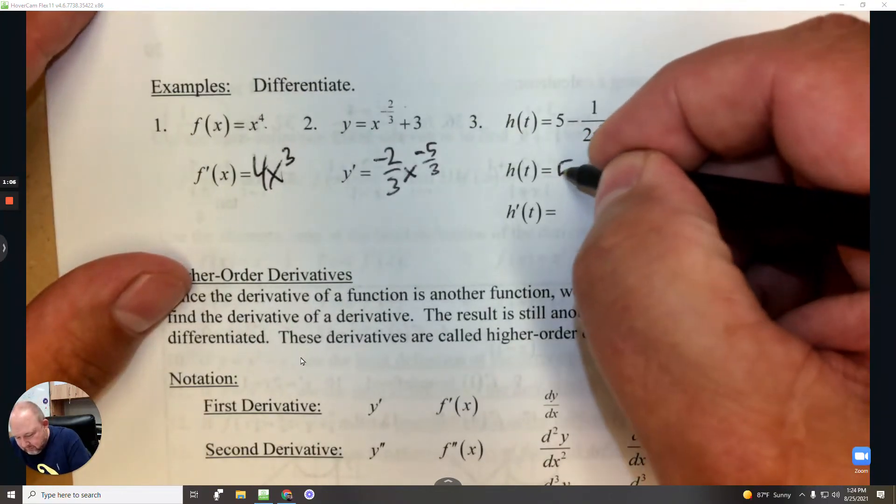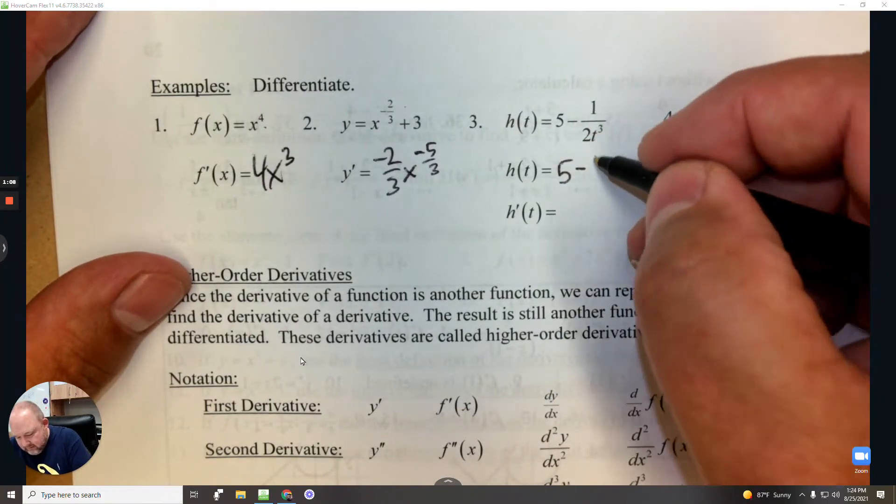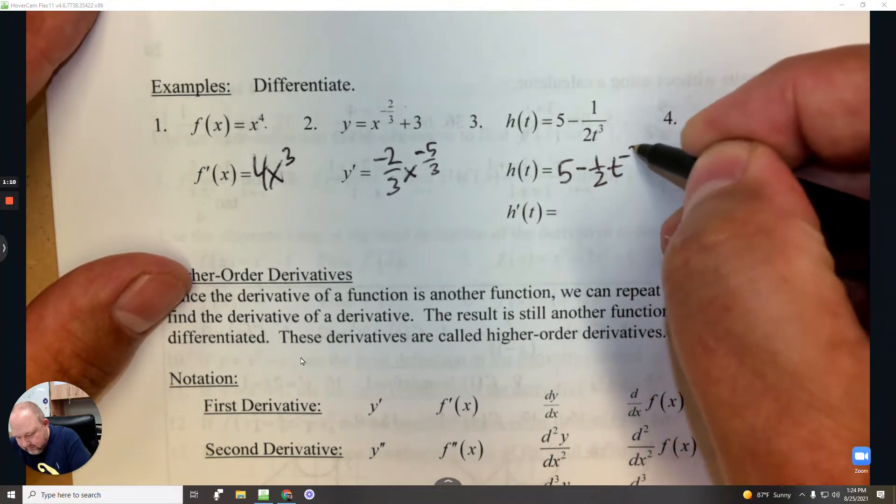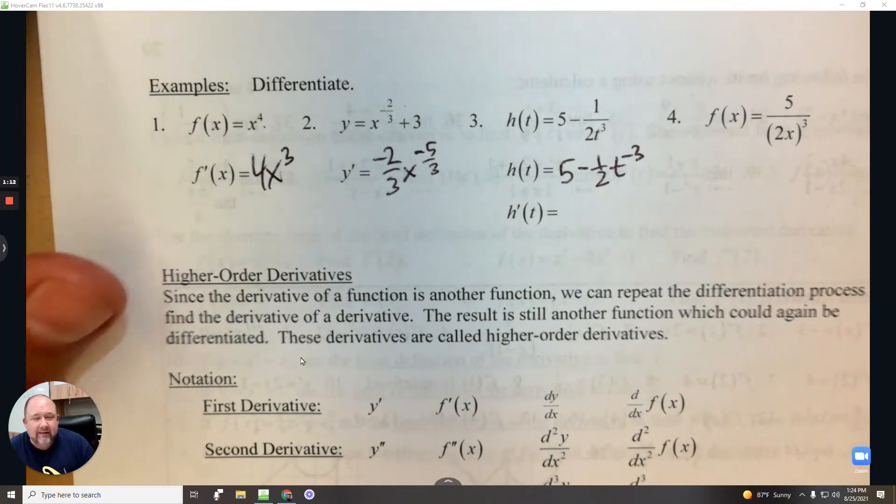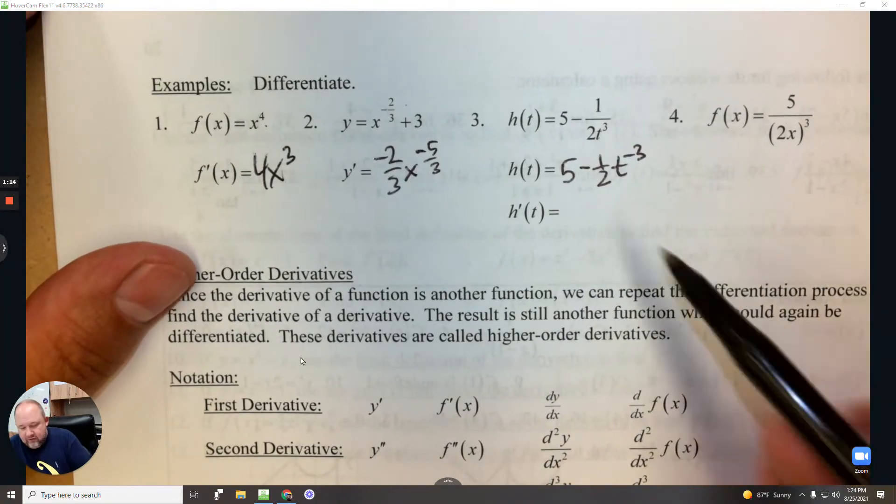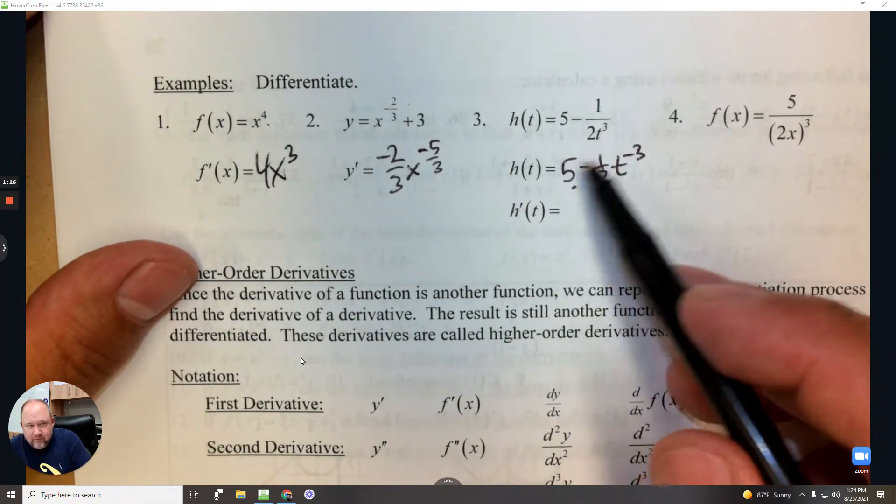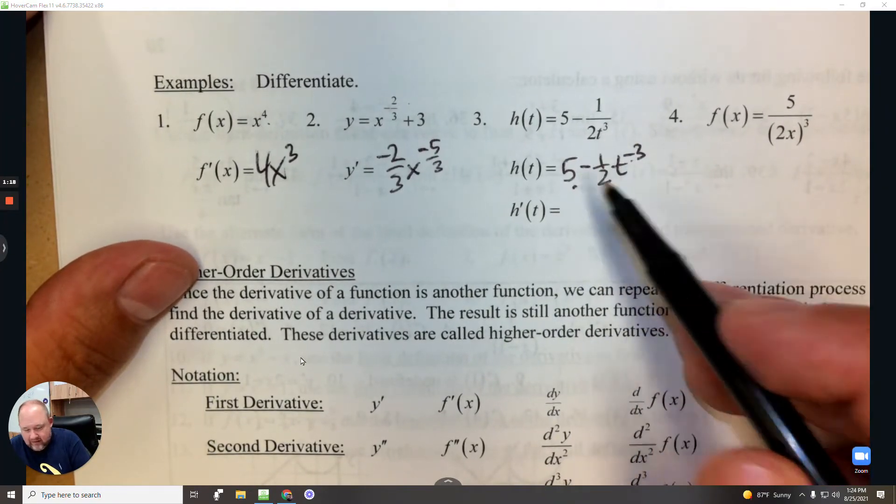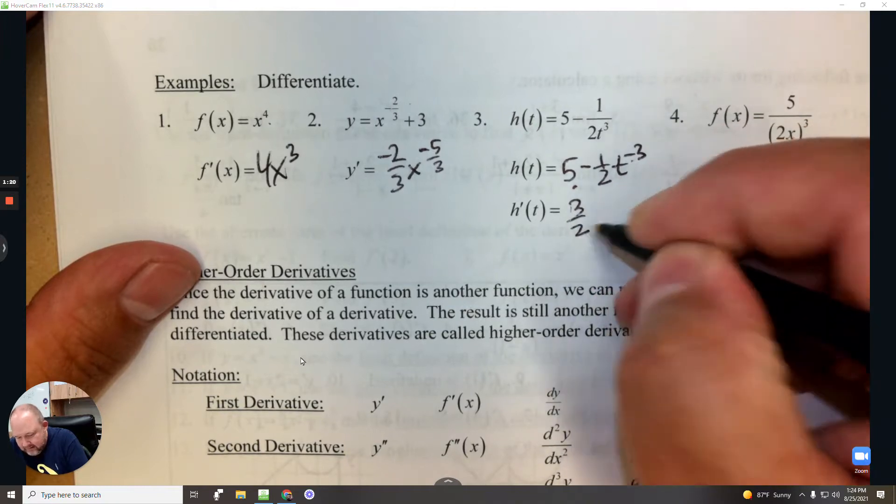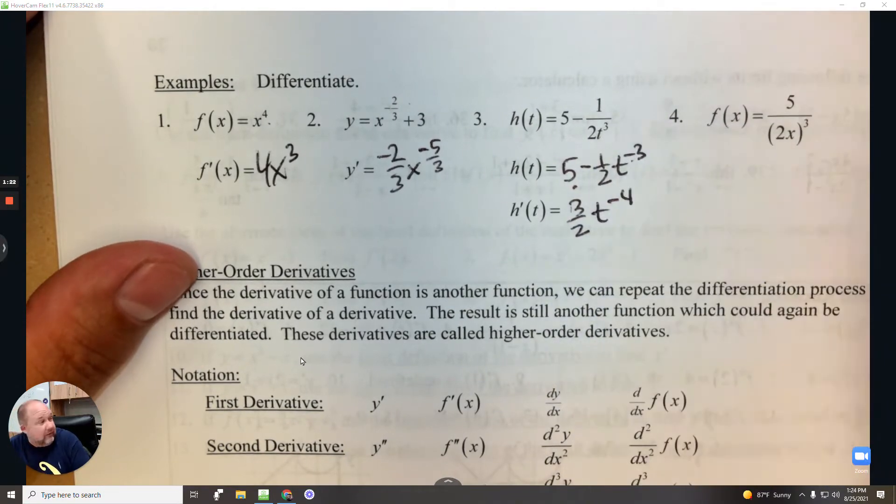Here it'd be helpful to write it with a negative exponent rather than a fraction. The derivative of 5 is 0, and then negative times a negative is positive 3 halves, and again subtract 1 to the exponent.